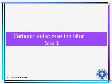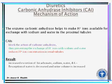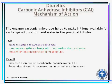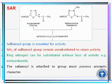Carbonic anhydrase inhibitors (site 1): the enzyme carbonic anhydrase helps make H+ ions available for exchange with sodium and water in the proximal tubules. Carbonic anhydrase inhibitors block the action of this enzyme, thus preventing the exchange of H+ ions with sodium and water, reducing H+ ion concentration in the renal tubules. This results in increased excretion of bicarbonate, sodium, water, and potassium ions, decreased water reabsorption, and increased urine volume.